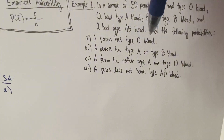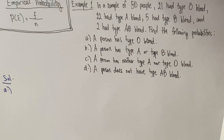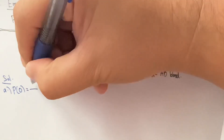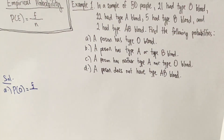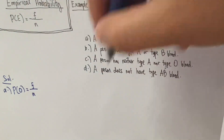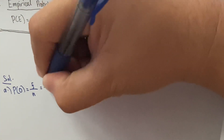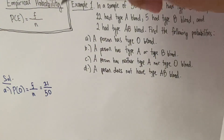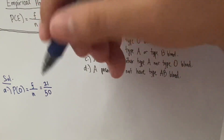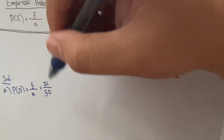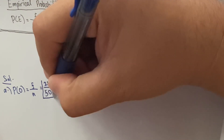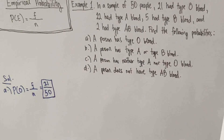For part (a), we want to know the probability that a single person from the sample of 50 has type O blood. The probability of O equals the frequency of O divided by the total number of frequencies. There are 21 people with type O blood, so P(O) = 21/50. This is already in its simplest form since 21 and 50 share no common factor.